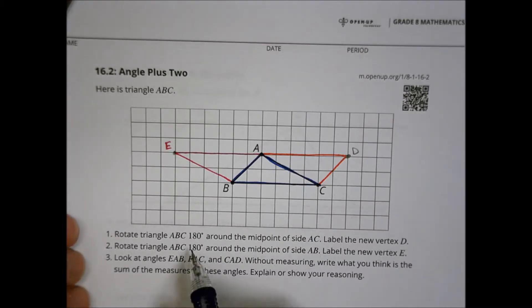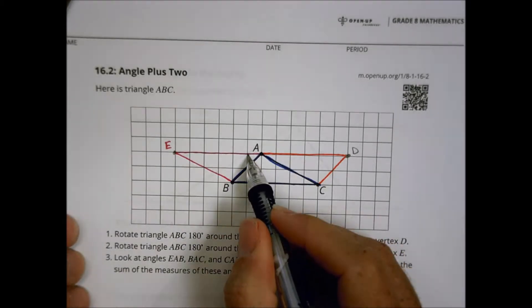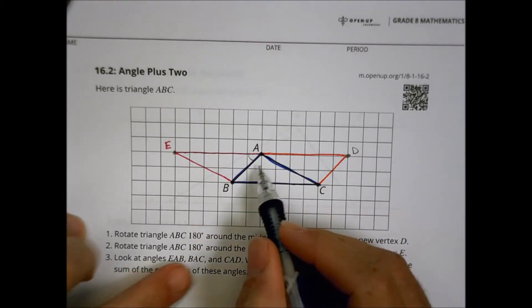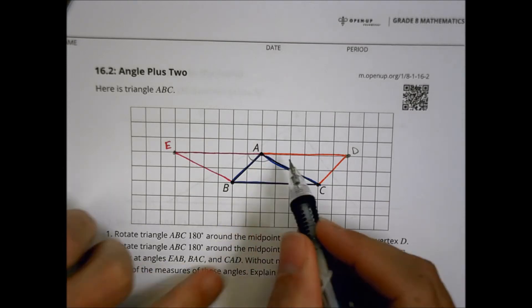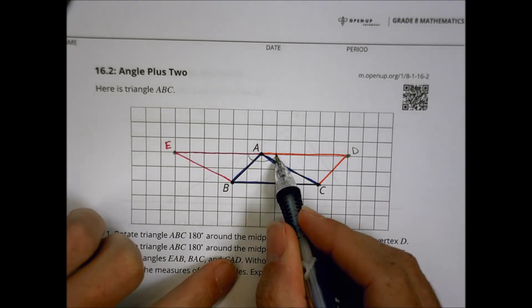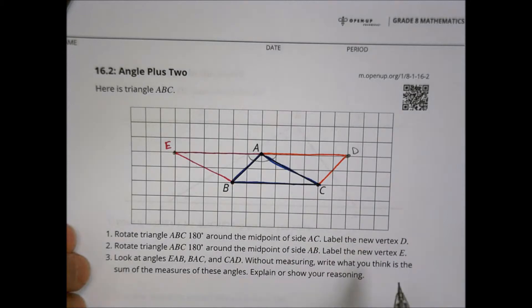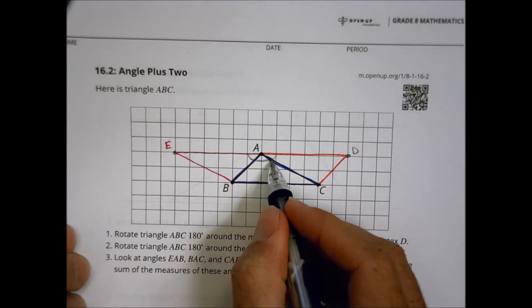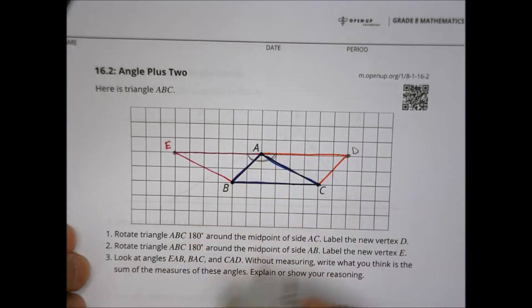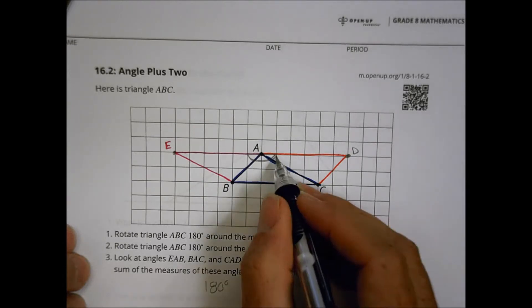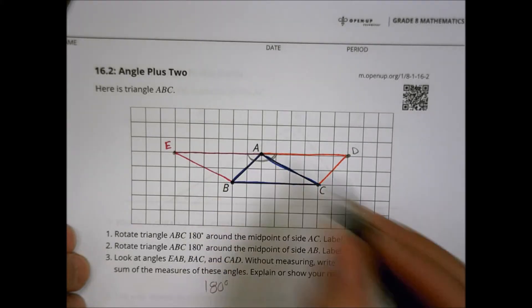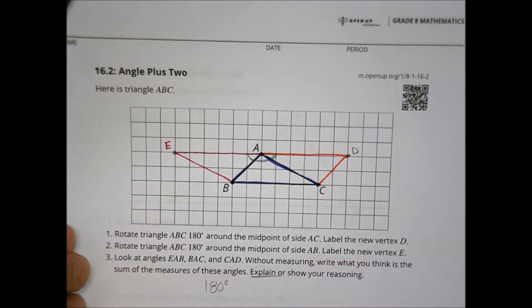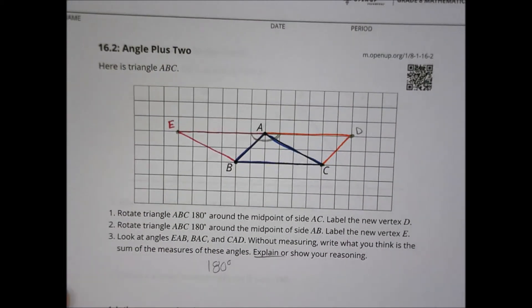It says to look at angles EAB, BAC, and CAD. Without measuring, write what you think is the sum of these angle measures. What we saw was that these three angles combined make a straight line — a straight angle. We would say they are definitely 180 degrees because it makes a straight line there, and you explained that in your conversations with your classmates.